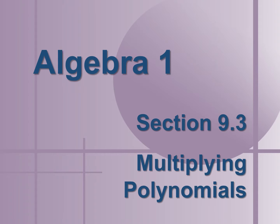Today we're going to look at how to multiply polynomials. Remember, a polynomial has more than one term in it. When we multiply them together, we have to remember all of our exponent rules, the distributive property, and the process of multiplying two numbers together.